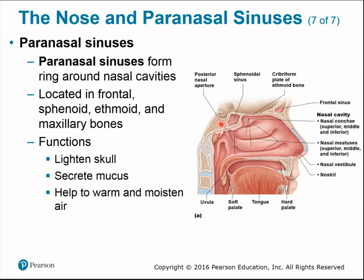The paranasal sinuses form a ring around the nasal cavity. Several sinuses are located here: the frontal sinus, sphenoid sinus, ethmoid, and maxillary. You just need to know their general functions. They help lighten the skull — if the skull were solid bone throughout it would be very heavy, so these open spaces reduce that weight. They also secrete mucus — if you've had a cold or sinus infection, excess mucus causes sinus pressure and headaches. They also contribute to warming and moistening the air as it's inhaled.